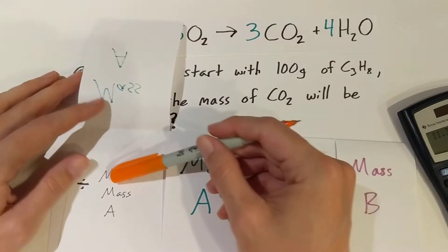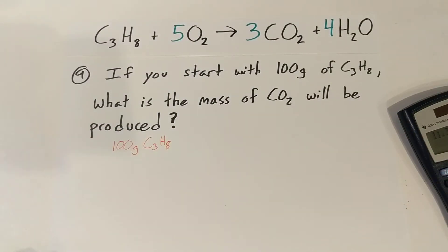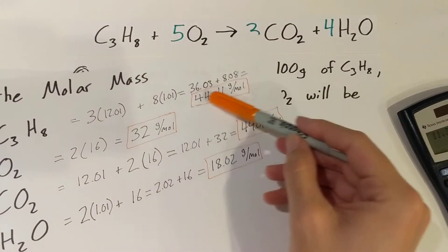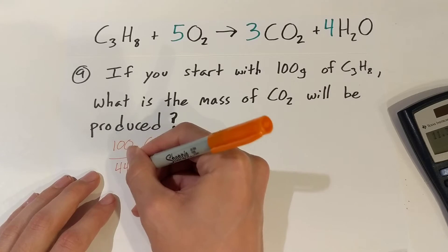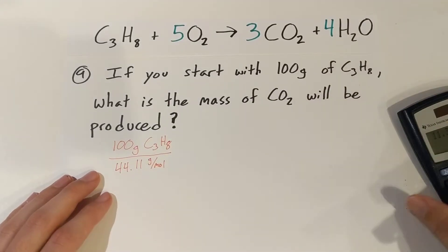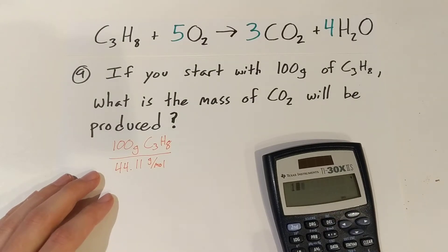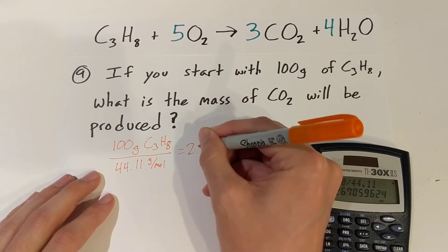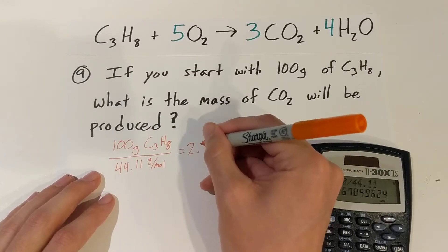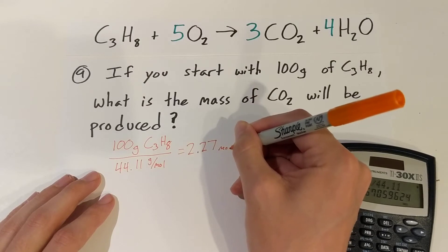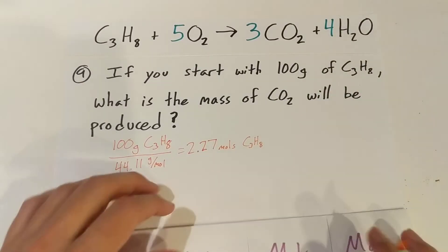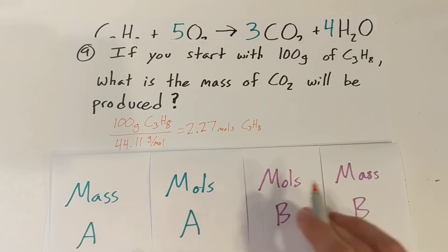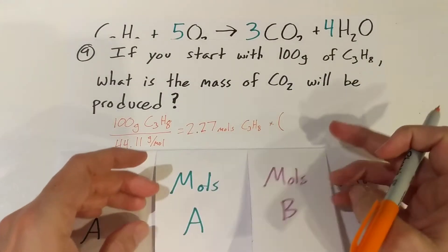We just divide by our molar mass, and this is exactly like the last problem. Our molar mass is 44.11, and just like last time we get 2.27 moles of propane.